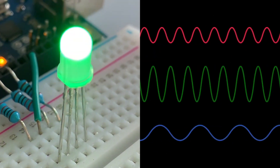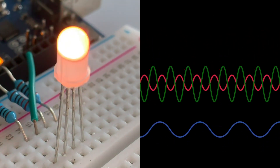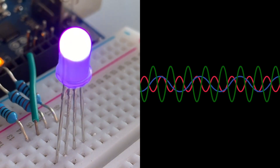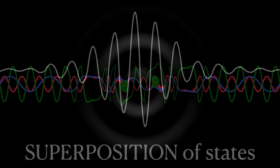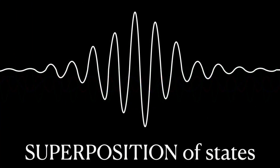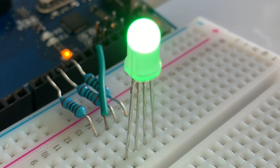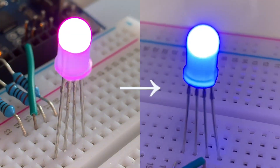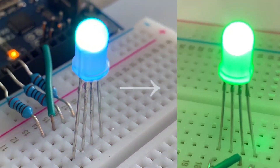As we saw with colors, waves can interfere to form new distinct states called superpositions. In the end, though, there's only one single visible state.